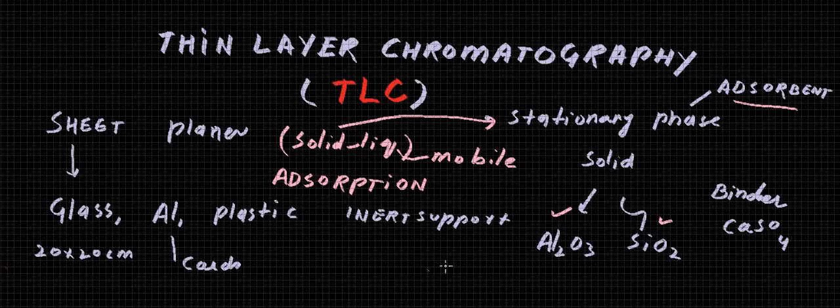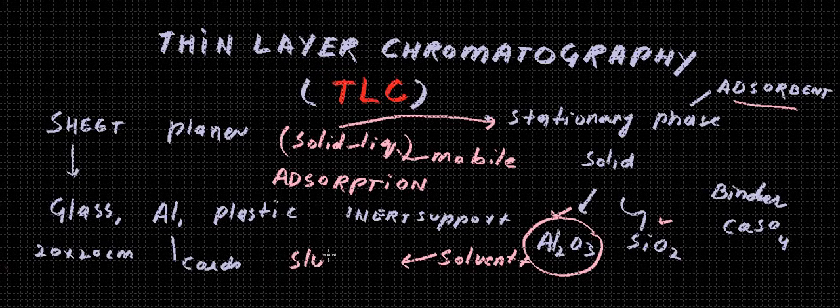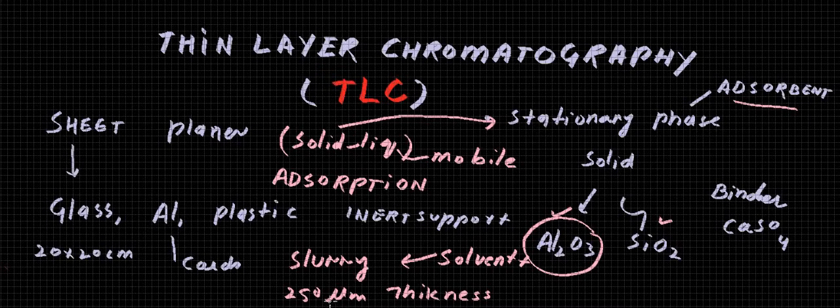The sheet of glass is coated with the solid stationary phase mixed with some solvent like water. It is converted into a slurry, and that slurry is applied on these sheets. We can say around 250 micrometers thickness layer is produced, slightly variable but to this extent. And then that solvent is evaporated or dried, and we get a homogeneous thickness layer of the solid adsorbent on these sheets.